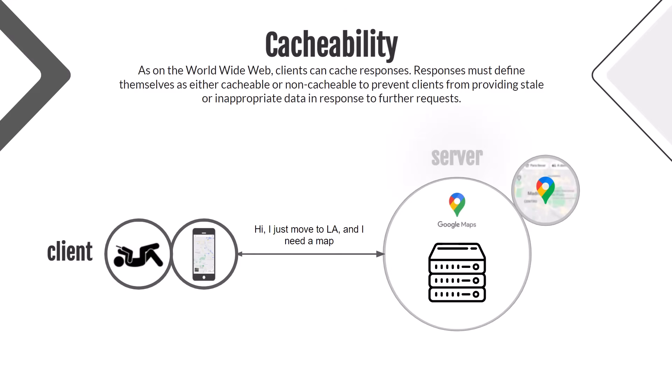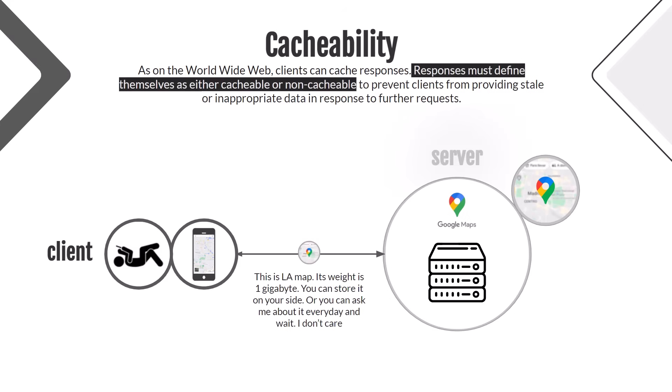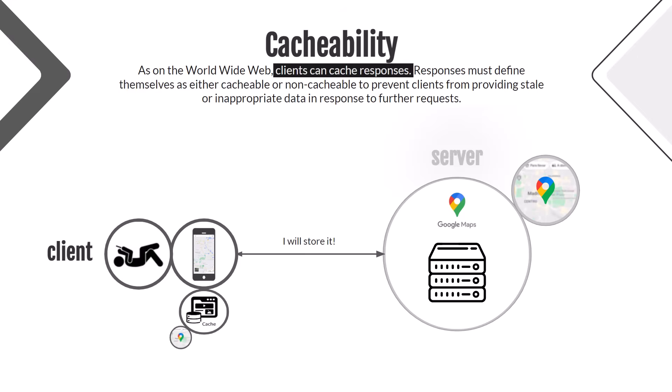The client says: 'I just moved to LA and I need a new map.' The server finds the map in the database and sends it back. Additionally, the server informs the client that the map is huge and if the client asks for it each time a user opens the map, the user will have to wait — depending on the download speed. This is related to the definition: responses mark themselves as either cacheable or non-cacheable. The server informs the client that it can cache the data — the response is cacheable. This kind of data — site logos, images, and maps — is the best candidate to be cached and stored on the client side.